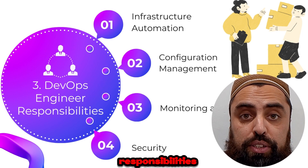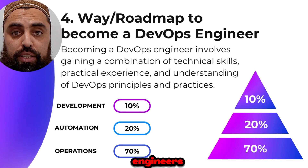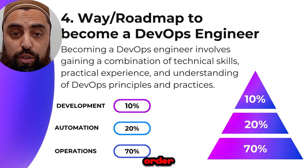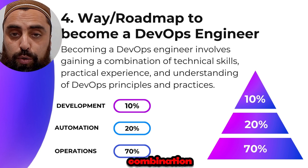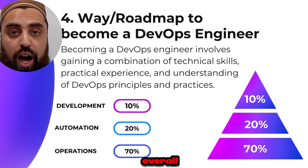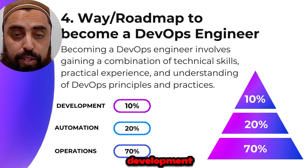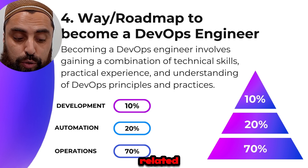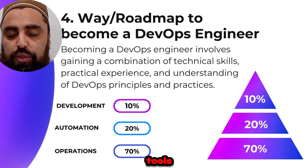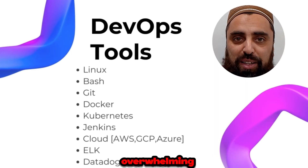One of the most important questions asked of DevOps engineers is: what is the roadmap to become a DevOps engineer? It involves gaining a combination of technical skills, practical experience, and understanding of DevOps principles. I've divided the roadmap into: operations 70%, automation 20%, and development 10%. For operations you must know Linux; for automation, CI/CD tools like Jenkins; and for development, a single programming language.